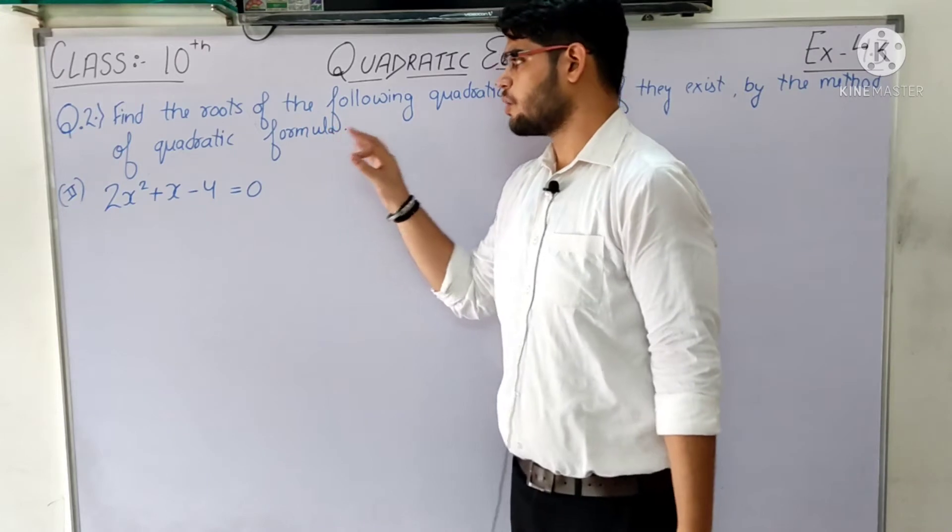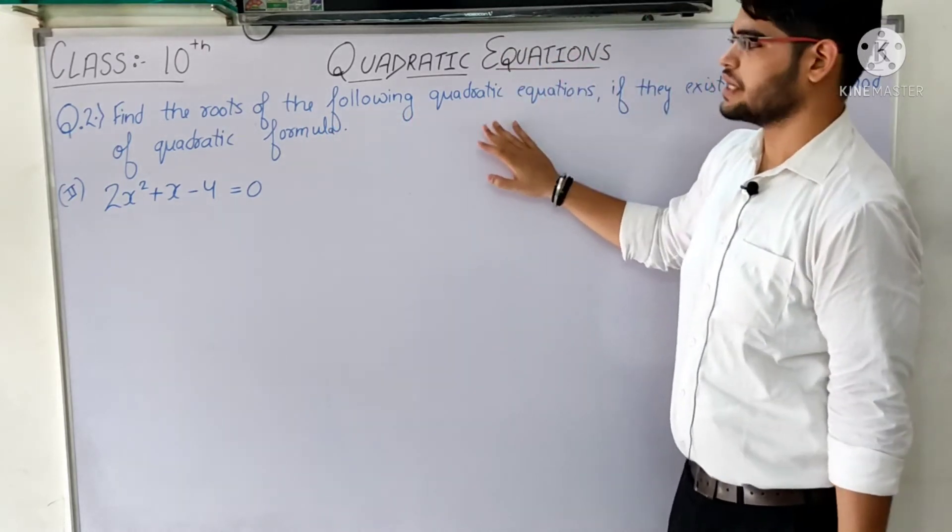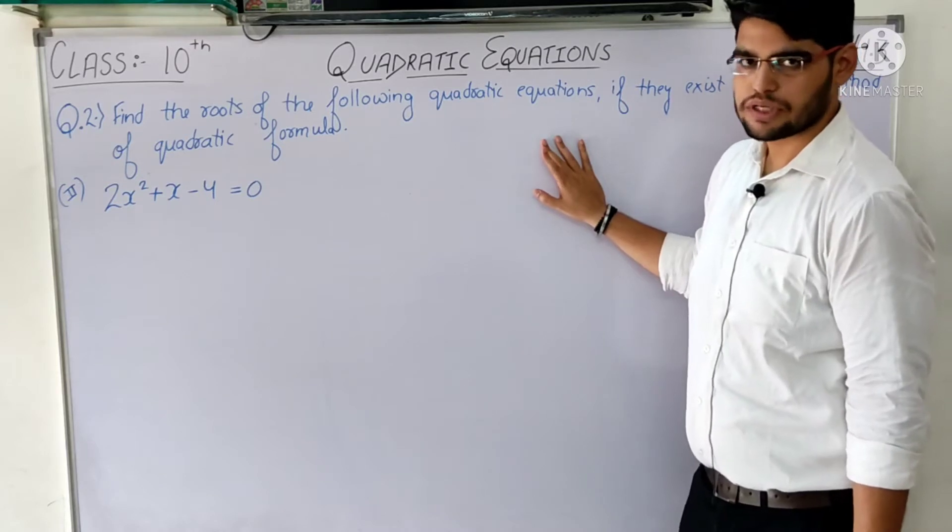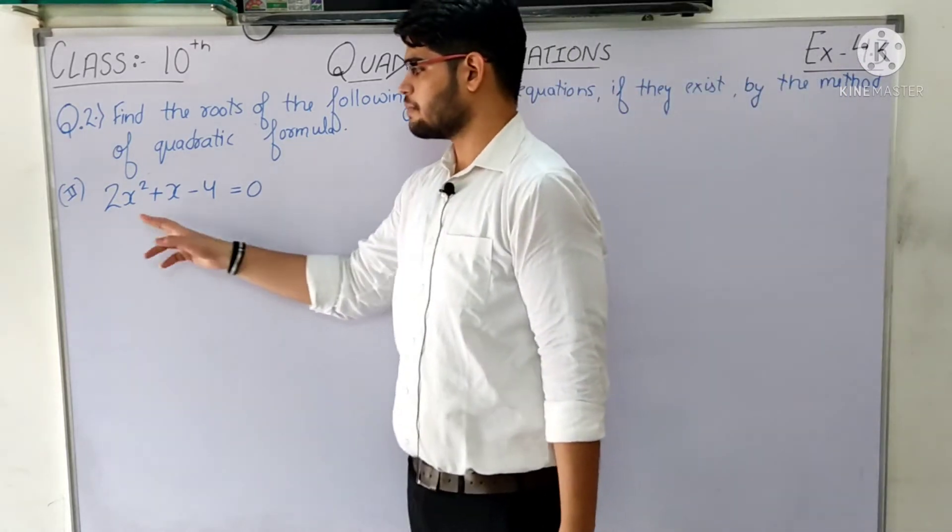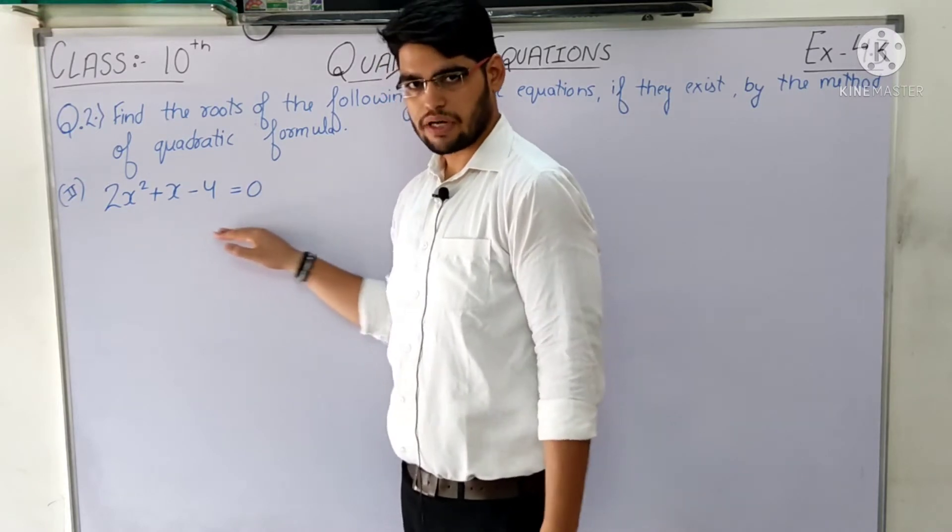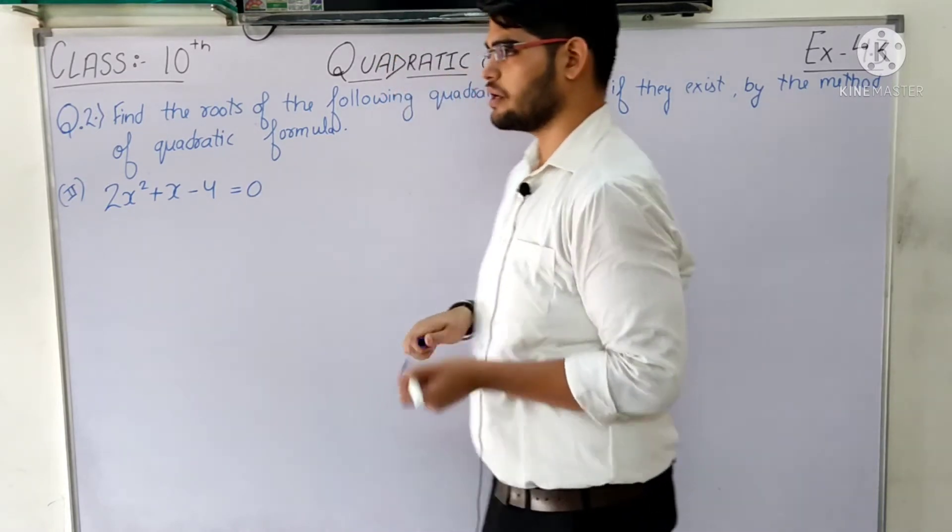Question number 2: Quadratic equations are solved by quadratic formula. The equation given is 2x² + x - 4 = 0. We have to solve this by quadratic formula.